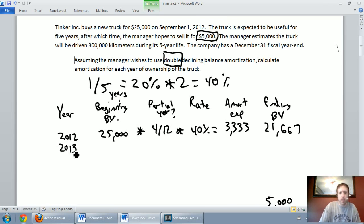Let's do 2013. In 2013, I've got to say, what did I start 2013 with in terms of a book value? The book value at the beginning of 2013 was 21667. Is it a partial year? No. I'm not even going to worry about that column. The amortization rate is indeed 40%. 21667 times 40% is 8667. Our amortization expense here is going to be 8667. Bringing the ending book value from 21667 minus 8667. And I get an ending book value of $13,000.